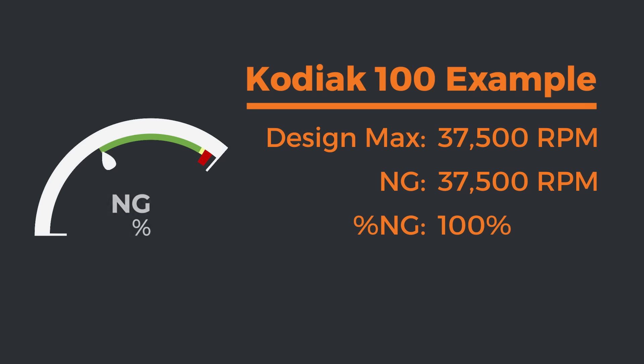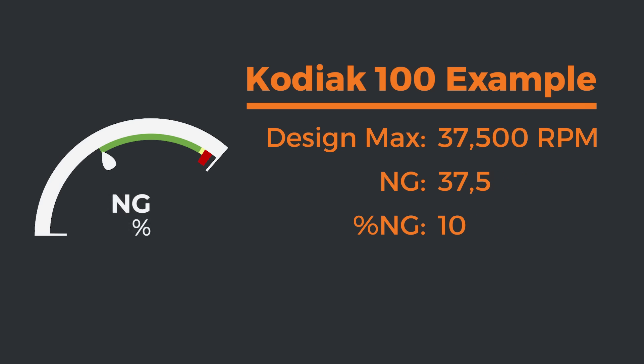If they showed NG as a raw number, like 19,500 or something, that would be pretty hard to interpret on the fly — pardon the pun. So instead they just show it as a percentage. In this example, 19,500 RPM would just be displayed as 52% NG. Remember that number — 52% — it's going to come up a few times in this video.